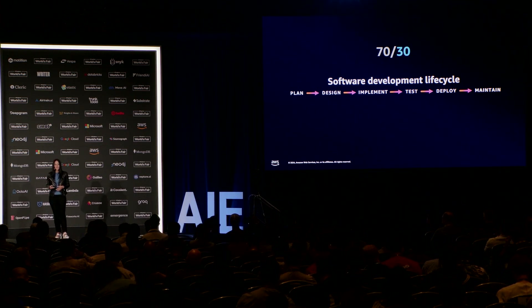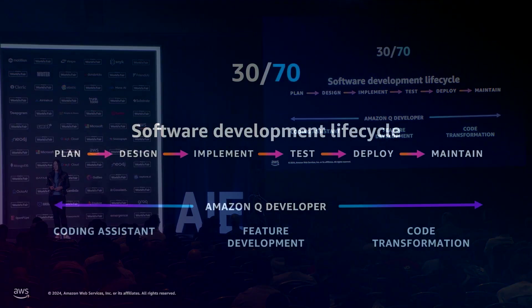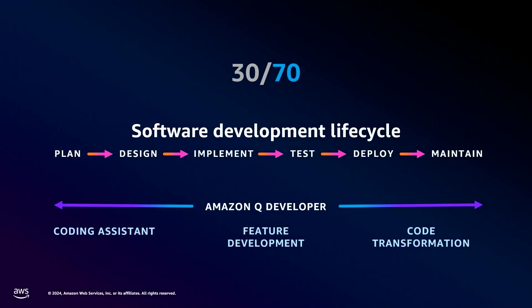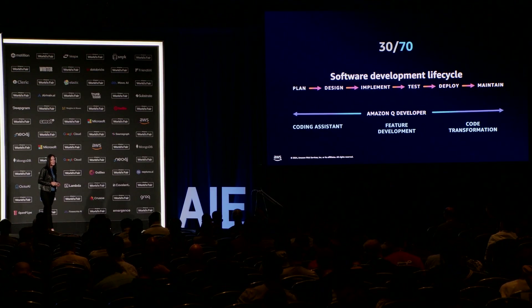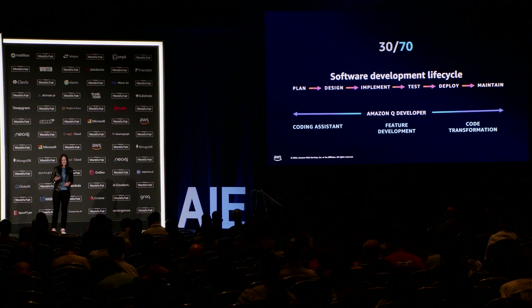This inspired us at AWS to create Amazon Q. Amazon Q is a generative AI-powered assistant specifically developed for software development. It's much more than just a coding assistant — Amazon Q Developer uses agents to perform complex tasks and help you automate things like feature development and code transformation, such as migrating old Java-based codebases to newer Java versions.